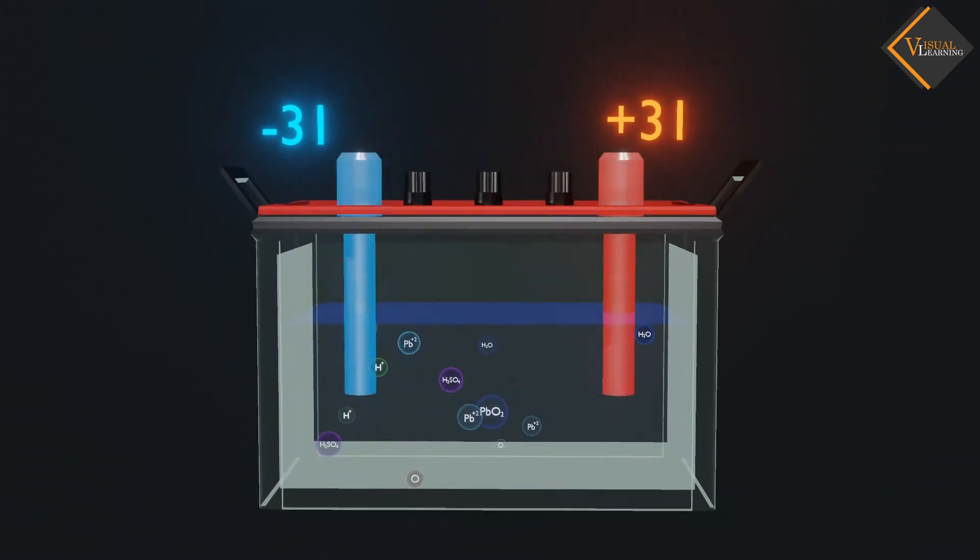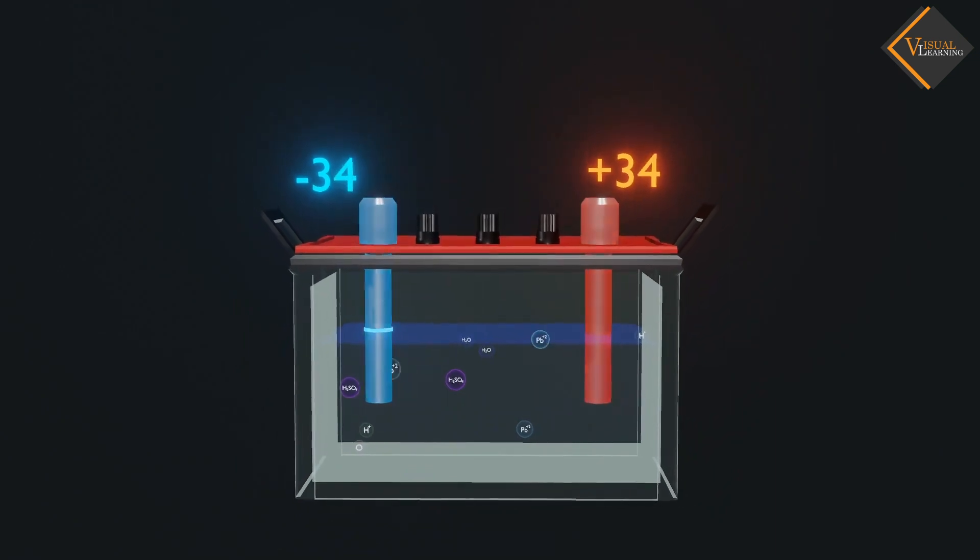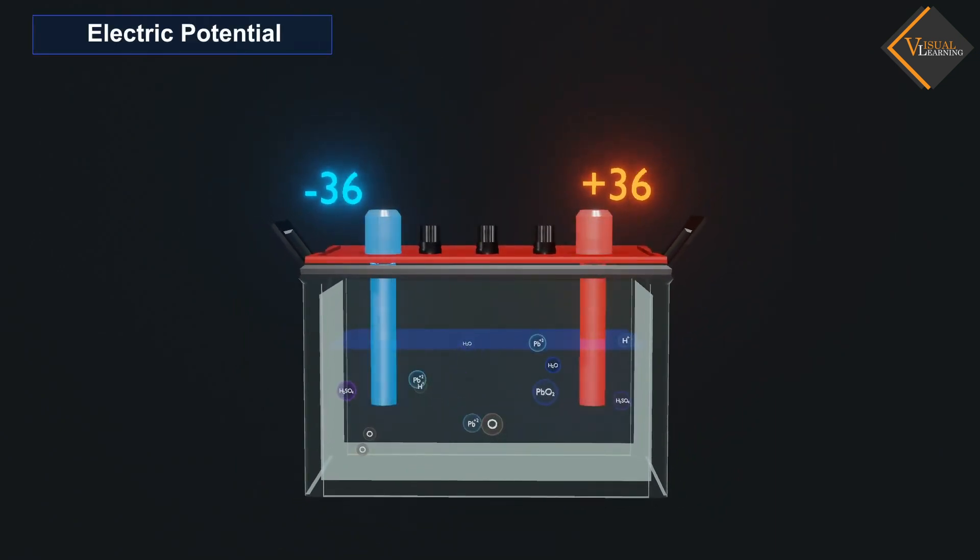These charge values of each electrode is known as electric potential. And the difference of charge between these electrodes is termed as potential difference.